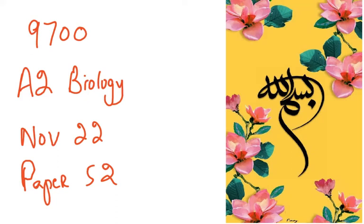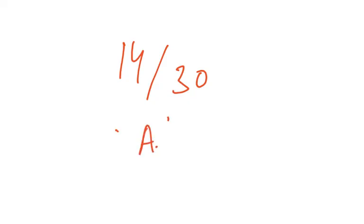Bismillahirrahmanirrahim. 9700 A2 Biology November 2022 Paper 5-2. This was one of the more unusual papers of all time — the grade A was given at 14 out of 30. So if you got 14 out of 30 in this paper, the component grade would be an A. Usually this is between 19 and 21, but in this paper, 14 out of 30 was an A, making it a very difficult paper.